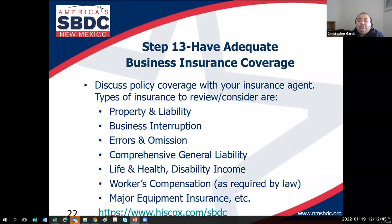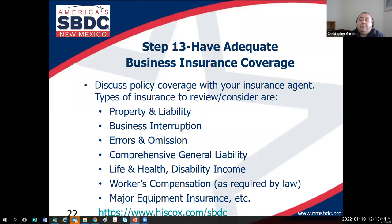Step thirteen — our final step — is to have adequate business insurance coverage. This slide shows the common types of insurance coverage for small businesses, and I recommend you research your options with an independent insurance broker. Independent insurance brokers sell insurance from many different companies and tend to be less biased. You can learn more about business insurance by visiting the link on the slide — it's for Hitchcock's Insurance Company's blog. They're one of the oldest insurers in the nation, having been around since the time of insuring Spanish galleons. You don't have to buy anything from them.